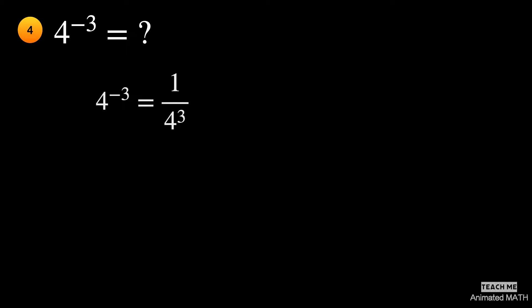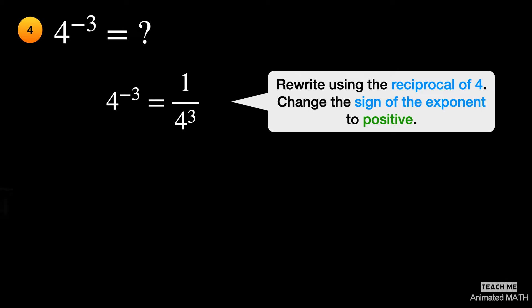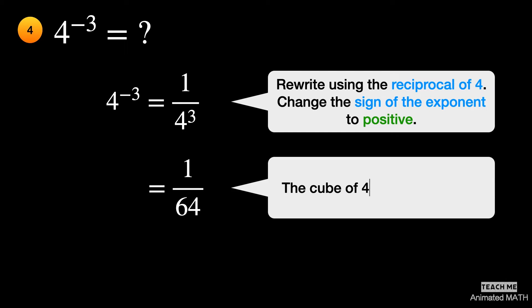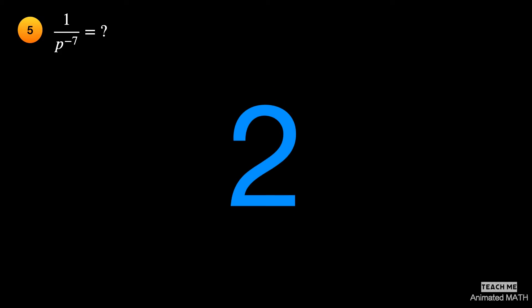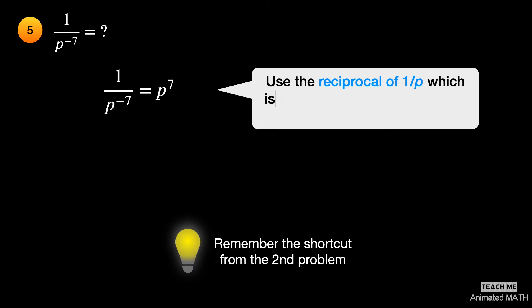Rewrite the expression using the reciprocal of 4 and change the exponent to positive 3. It is equal to 1 over 4 cubed, or 1 over 64. Remember the shortcut we discussed in the second problem? This expression is simply equal to p to the 7th power.